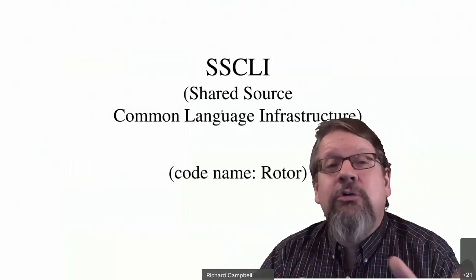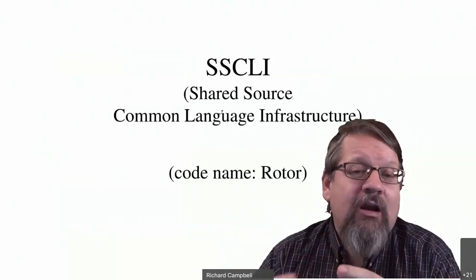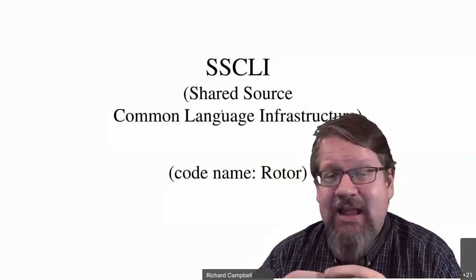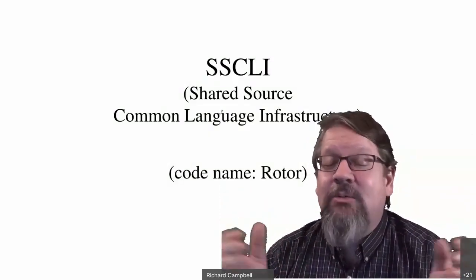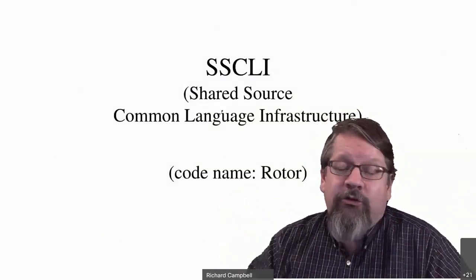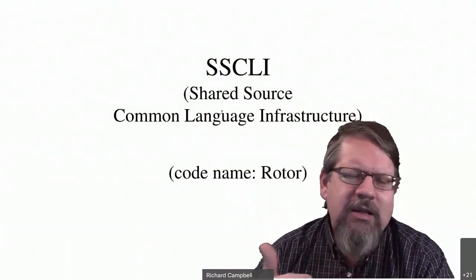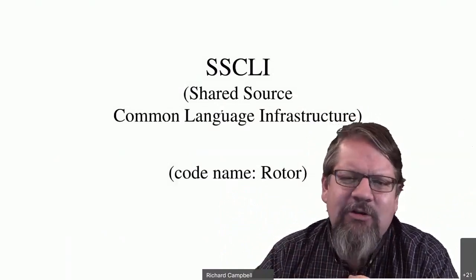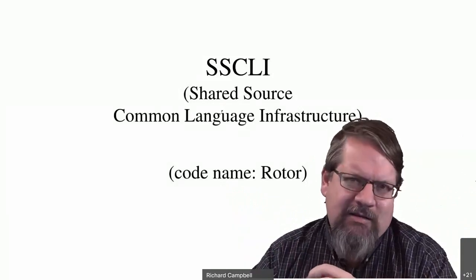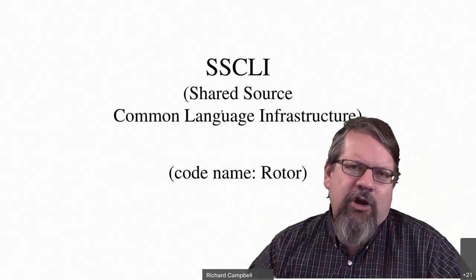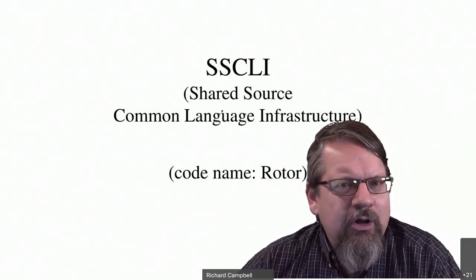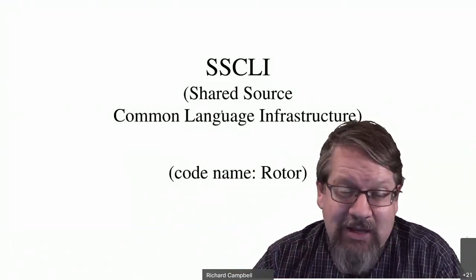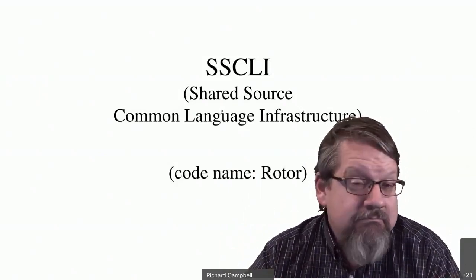Also part of the original release of .NET was the Shared Source Common Language Infrastructure — the codename was Rotor, because SSCLI sucks as a name. This was .NET with all the Windows stuff stripped out: the runtime, base class libraries, C#, the compiler. Was it open source? Not really. It was what they called an academic research license — if you had academic credentials, you could request access to the source code of .NET, minus all the Windows stuff. By access they meant you get to read it. It doesn't compile. You can look at it. Enjoy.